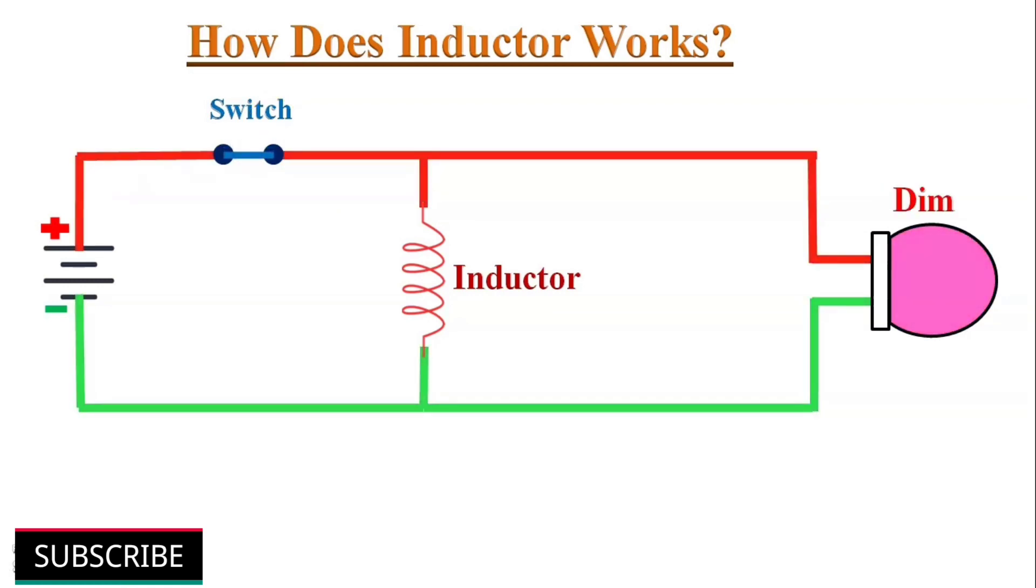When we power on this circuit, first the bulb burns brightly, then gets dimmer, and turns off after a little time. Note that the lamp is off, even though the supply is connected.